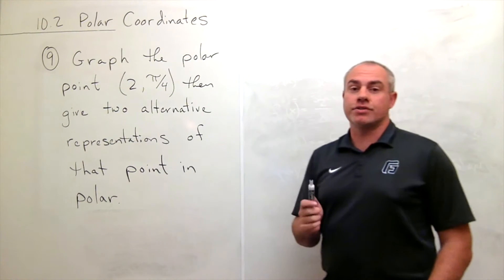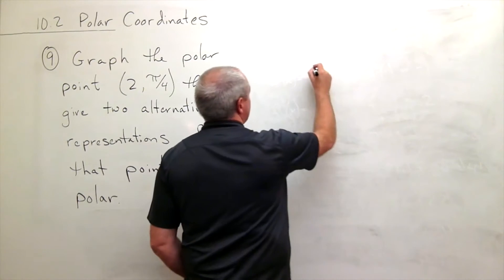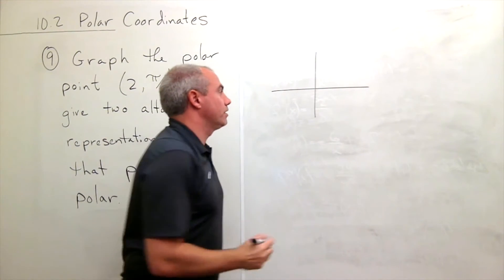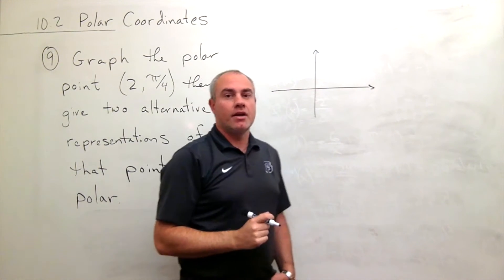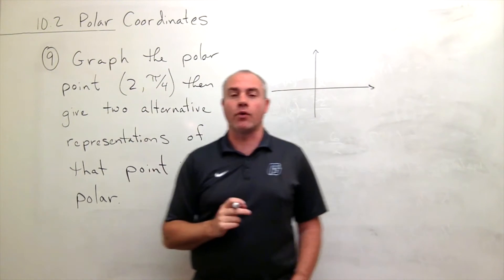All right, so to do this what I need to start with is let's draw my x-y axis. So here's my x-axis, my y-axis, and I want to graph the polar point (2, π/4).